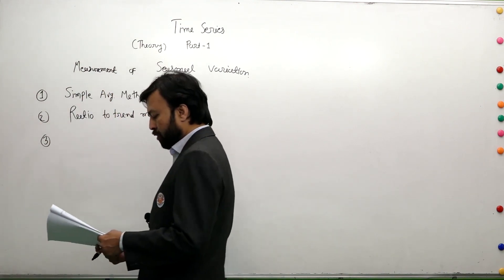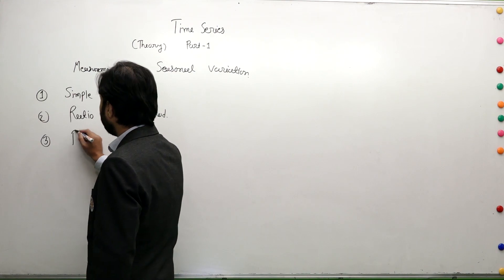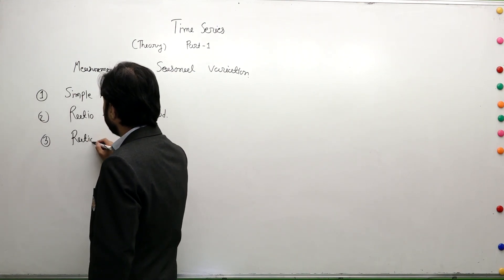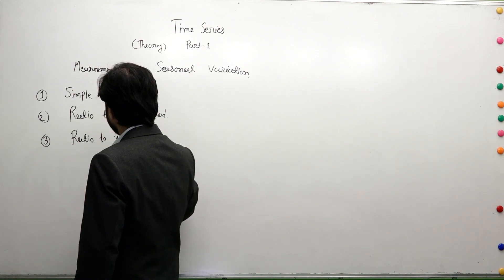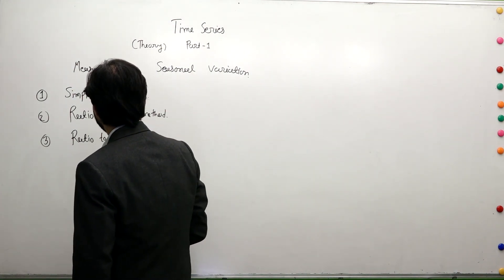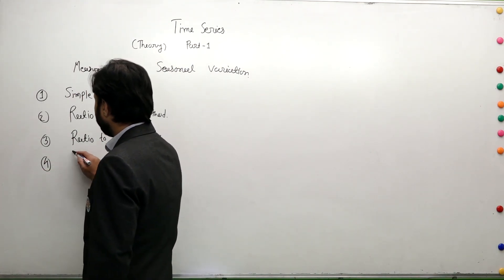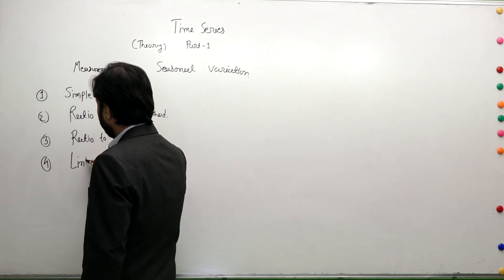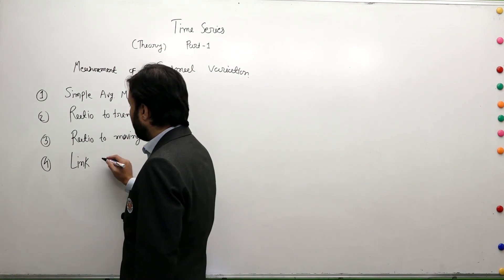Third method which is used is ratio to moving average method. The last method, fourth method, is link relative method which was also there in index number method.